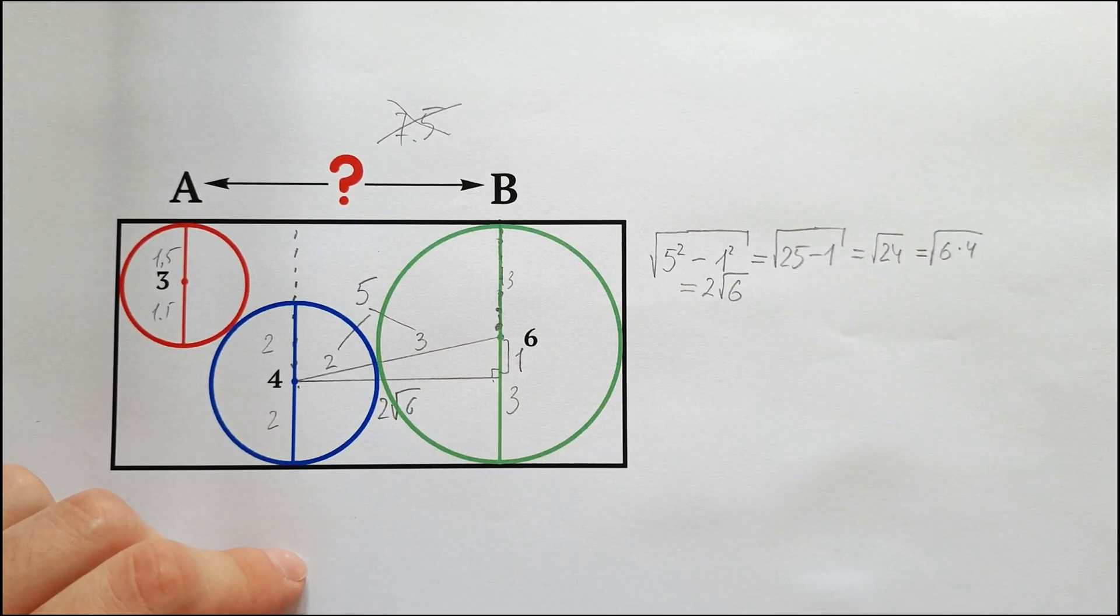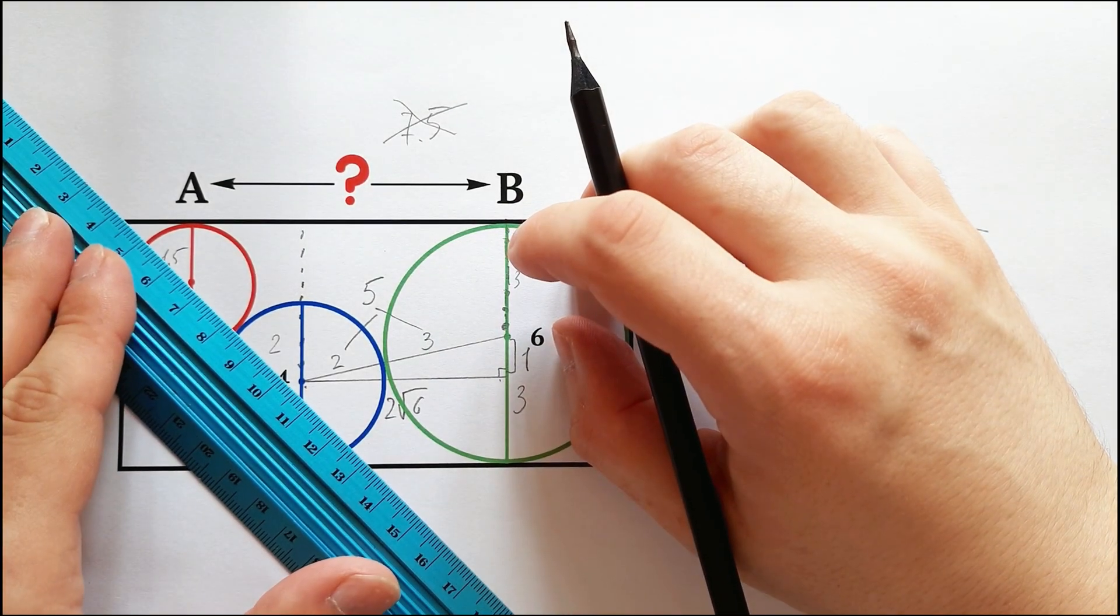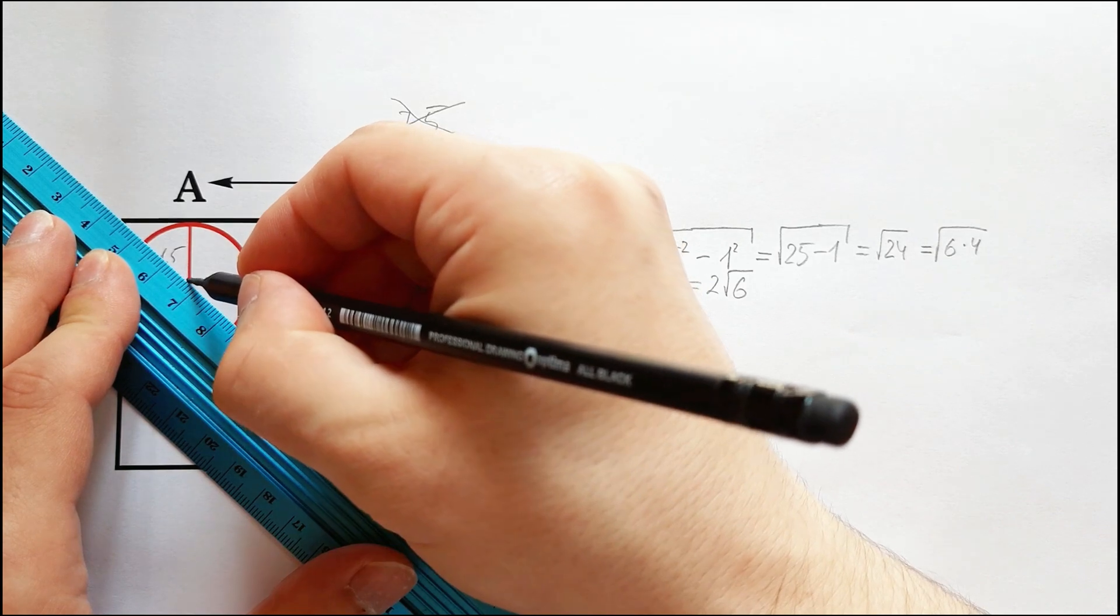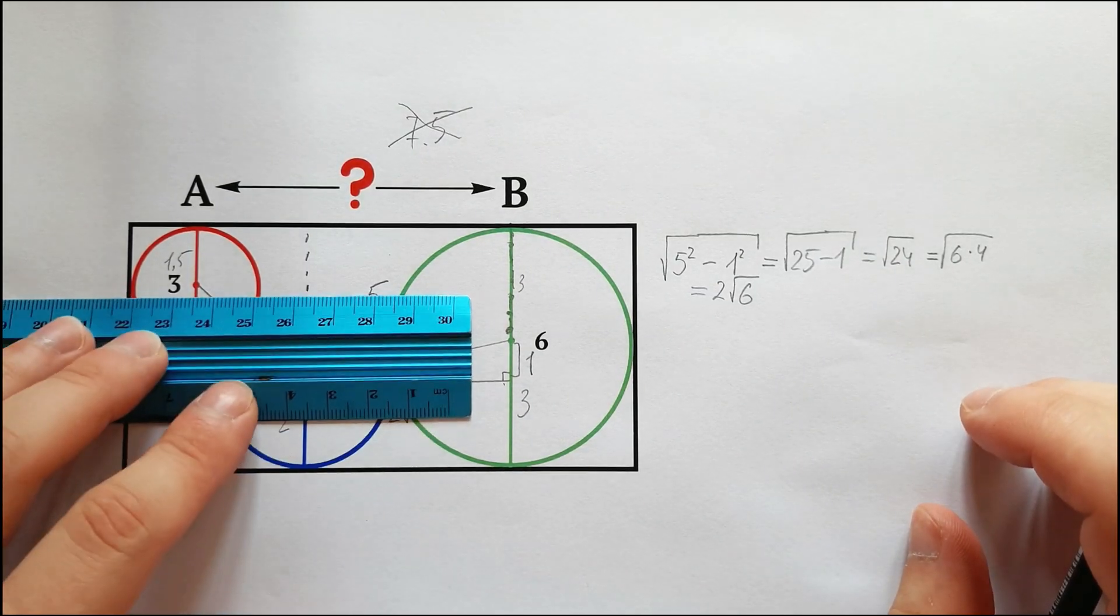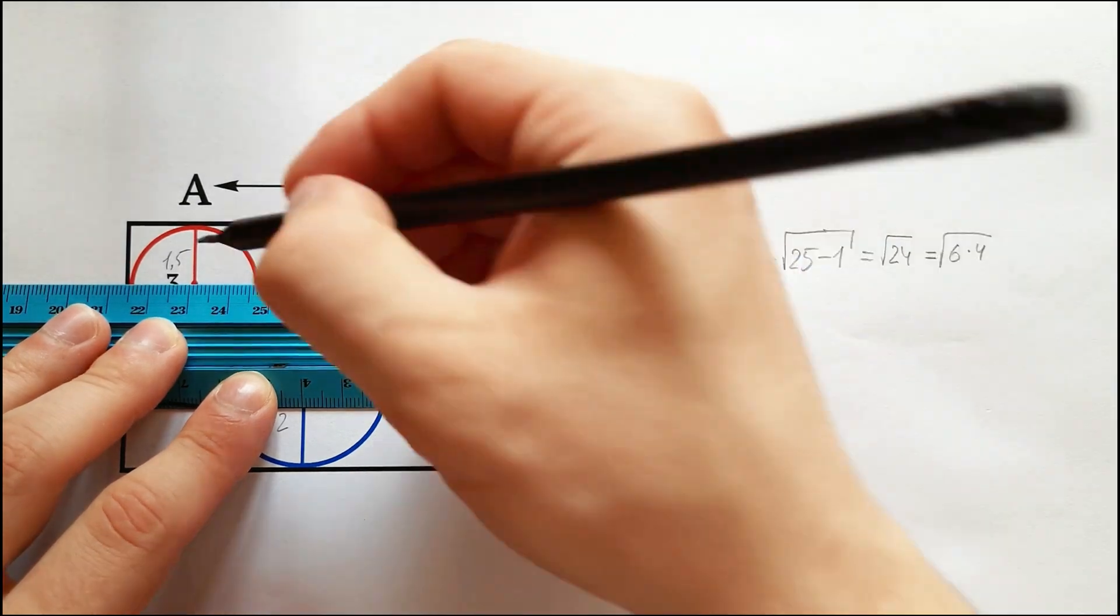Moving forward, now let's connect the centers of the red and blue circles, and again we will draw a perpendicular to get another right triangle.